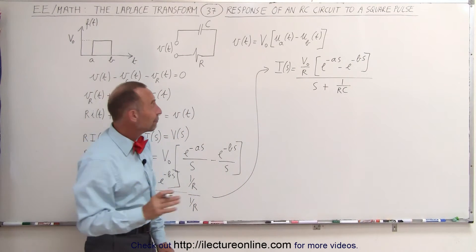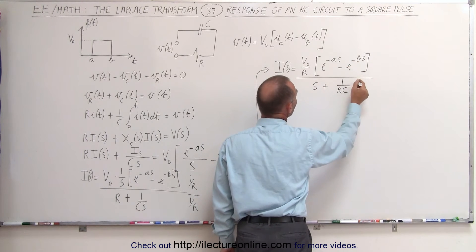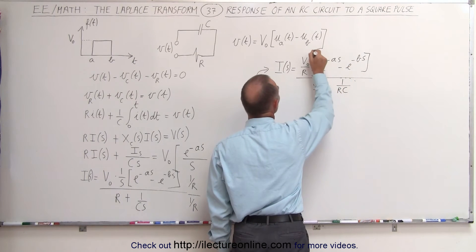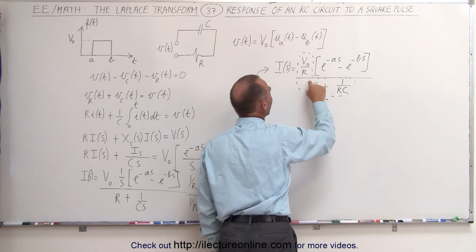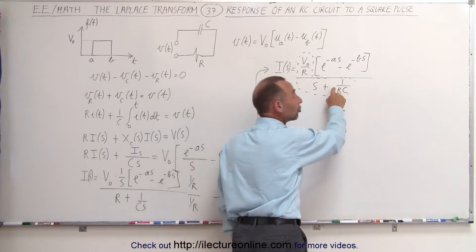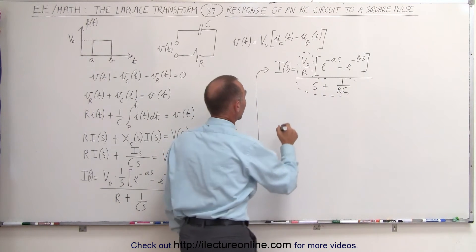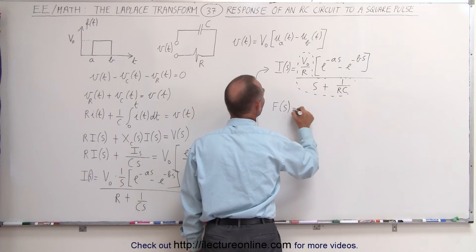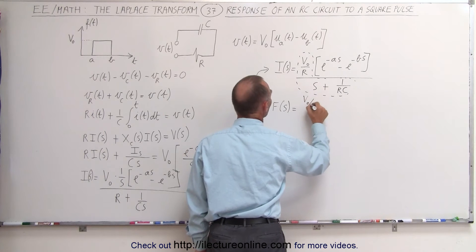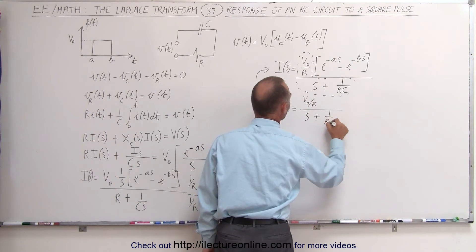To take the inverse Laplace transform, we first ignore the shift terms and focus on this portion of the function: F of S is equal to V sub nought over R divided by S plus 1 over RC.